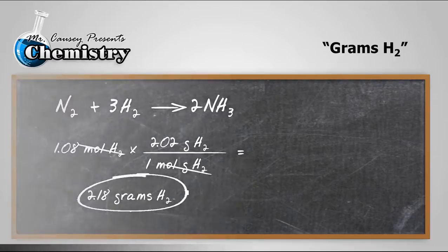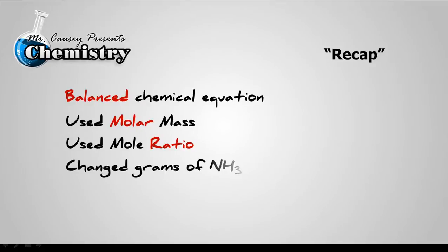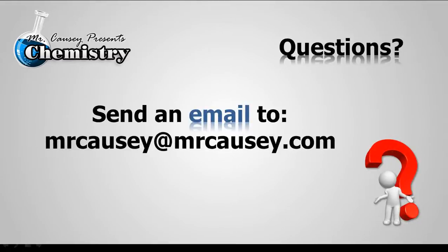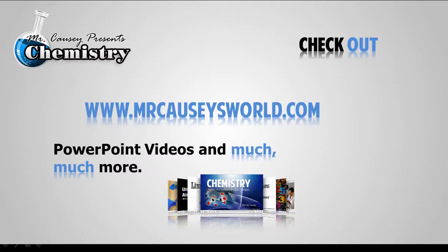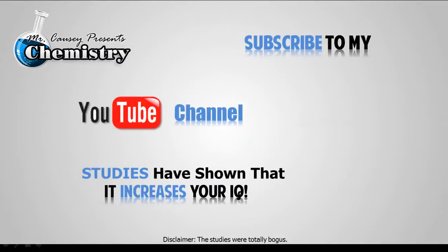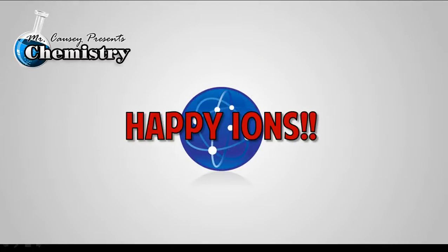And so, let's recap. We wrote a balanced chemical equation. We used molar mass. We then used the mole ratio. And we used molar mass again and changed grams of ammonia to grams of hydrogen. If you have any questions, just send off an email to mrkazi at mrkazi.com. And I'll try to answer as many as I can. Check out mrkazisworld.com or mrkazi.com, where I have powerpoint videos and much, much more. And also, check out and subscribe to my YouTube. Alright, everyone. Happy Ions.